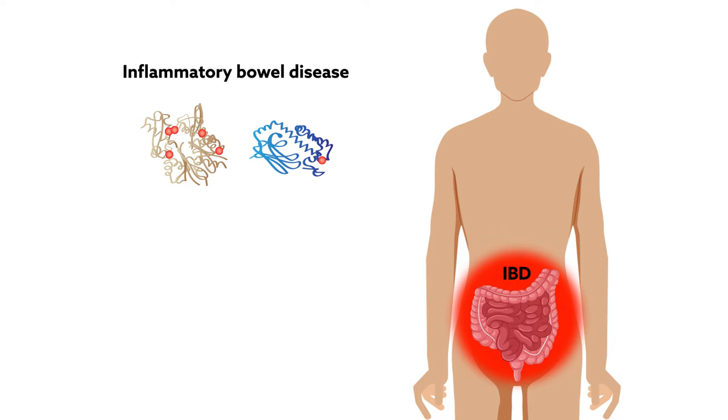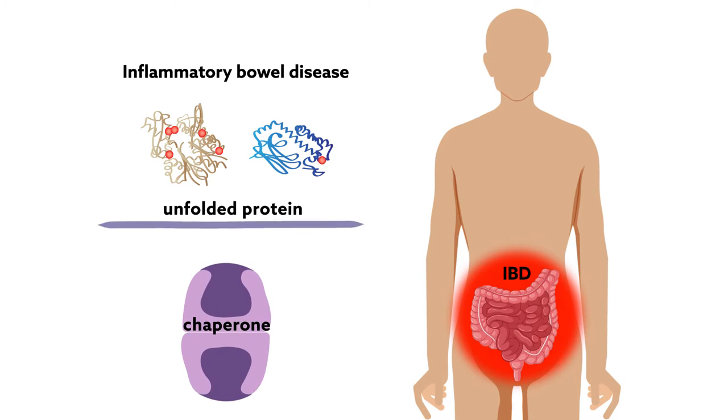While the mutations are rare, they point to an important role for a family of so-called chaperone proteins, which help other proteins fold properly in cells, and offer new ways to treat the disease.